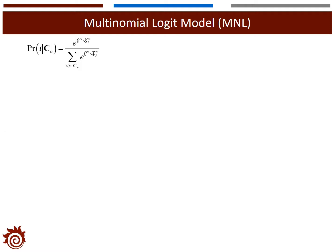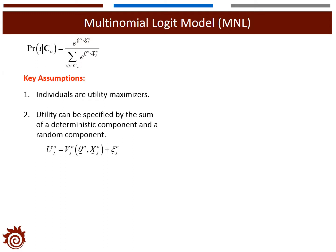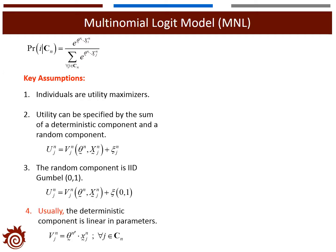The formula here describes the probability that we're going to choose mode i from the set of cn. We have several assumptions for this equation. First, all individuals are utility maximizers — we are trying to maximize the utility for the mode we choose. Second, the utility can be specified by the sum of the deterministic component and the random component. Third, the random component follows the iid Gumbel distribution, which is a standard Gumbel distribution with parameters 0 and 1. Finally, this is not a mandatory condition, but usually the deterministic component is linear in the parameter, so v_jn is a function of observed variables x_j and the set of coefficients theta.